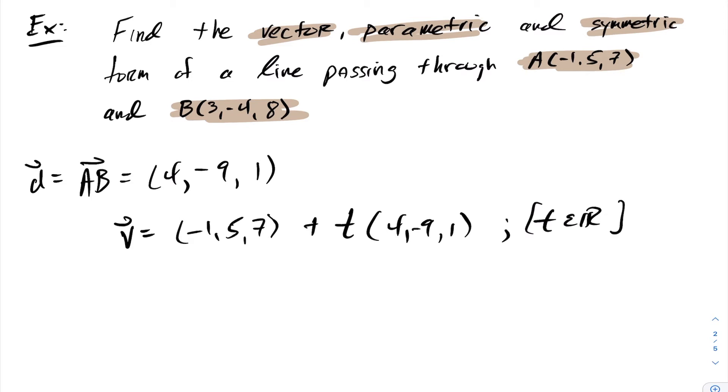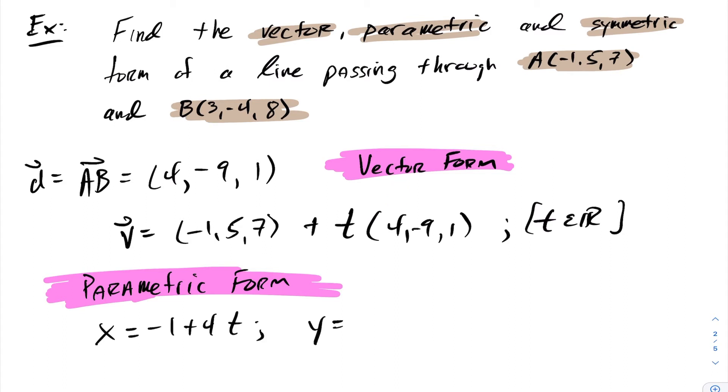Well once I have it in vector form it's fairly easy to put this in parametric form. To express this in parametric form we have our x coordinate is going to equal negative 1 plus 4t. Our y coordinate will equal 5 minus 9t, and similarly our z coordinate will be 7 plus t.